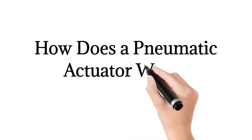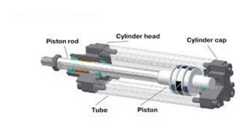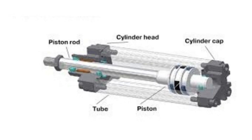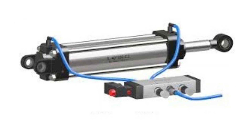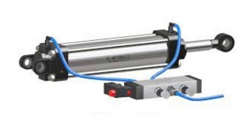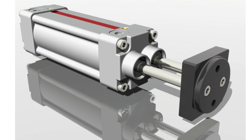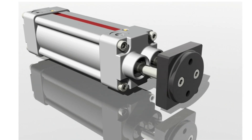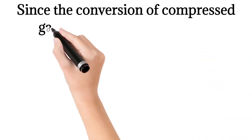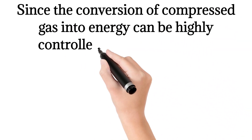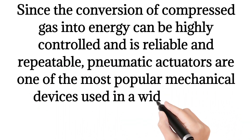Pneumatic actuators rely on some form of pressurized gas, most often compressed air, entering a chamber where the gas builds up pressure. When it has built up enough pressure in contrast to the outside atmospheric pressure, it results in the controlled kinetic movement of a device such as a piston or gear. This resulting movement can be directed in either a straight line or circular motion. Since the conversion of compressed gas into energy can be highly controlled and is reliable and repeatable, pneumatic actuators are one of the most popular mechanical devices used in a wide array of modern industries.